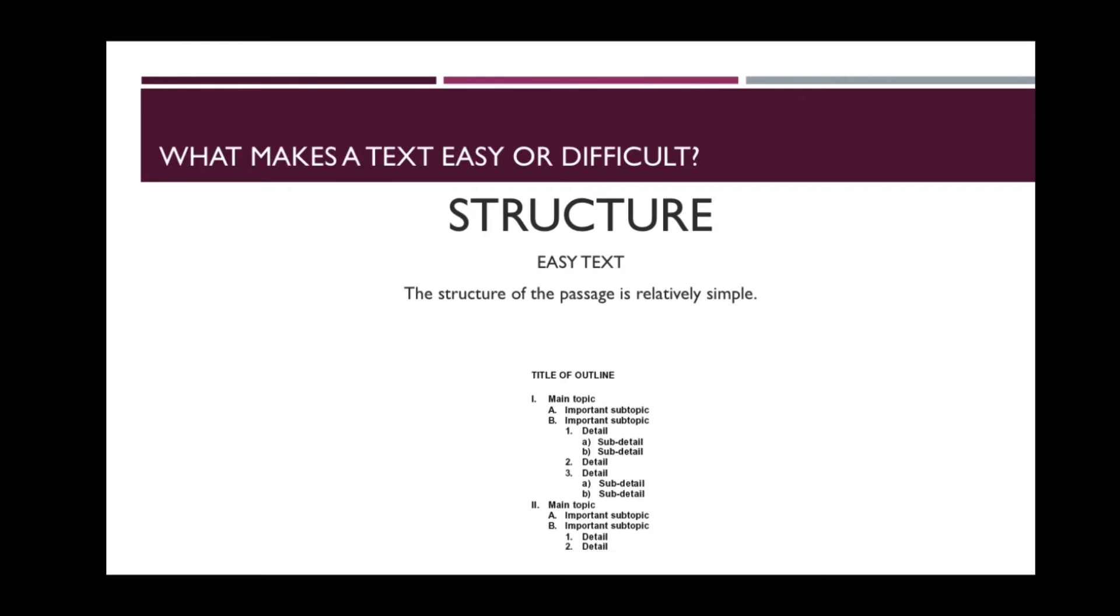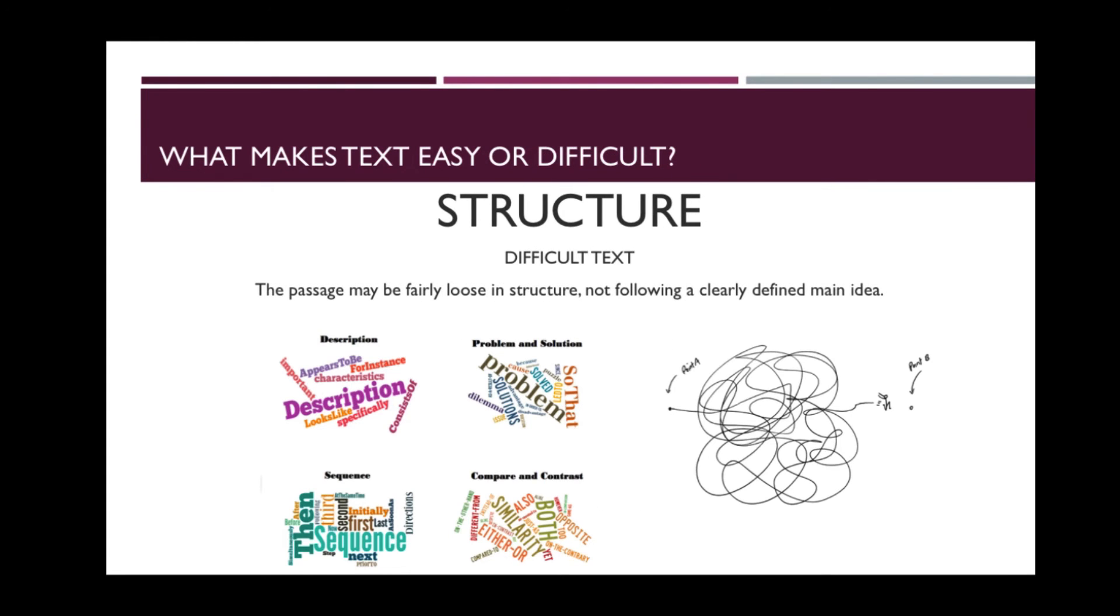The structure of easy text is also relatively simple. Paragraphs are generally introduced by topic sentences focused on a single main idea and use supporting details clearly related to the main idea. The structure of difficult text may be fairly loose and may not follow a clearly defined main idea.